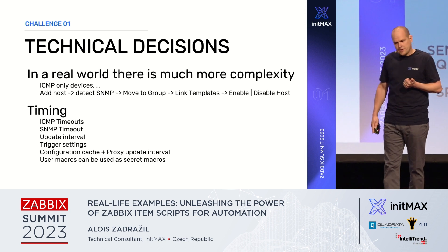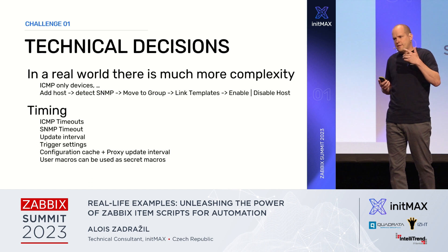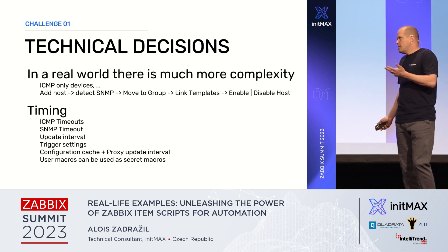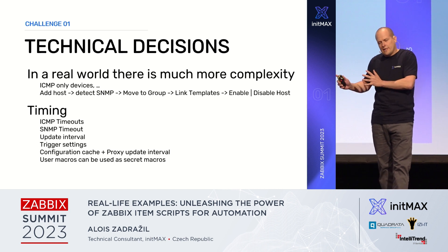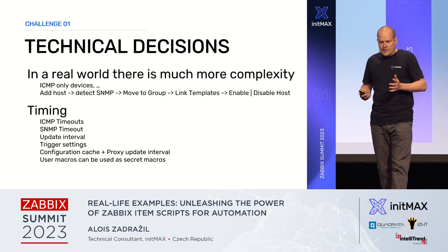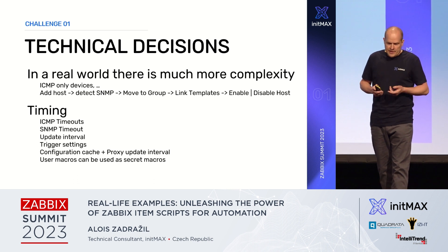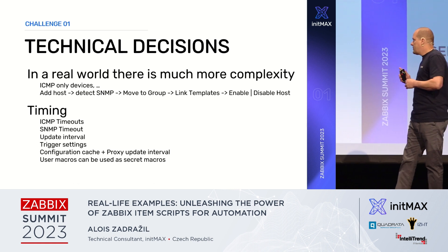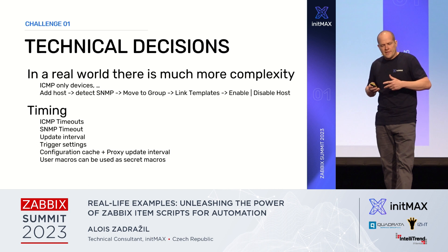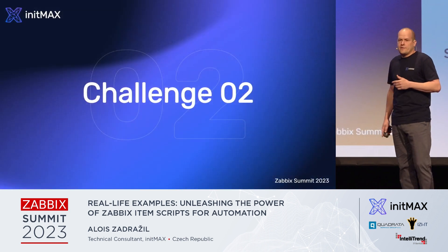For the last slide of challenge one — technical decisions. It's not so easy in the real world; there is much more complexity. You have to think about timing, timeouts of ICMP, timeouts of SNMP checks, update intervals of items, trigger settings, how many checks must be done to decide something is functional or not, and proxy cache update and configuration cache update intervals. One last note: you can use secret macros, but not throughout the whole process — you can use a secret macro at the final step when setting the final SNMP community string.